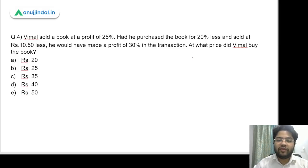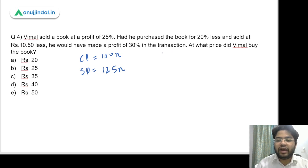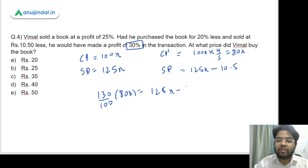Let's read question 4. Wimmel sold a book at a profit of 25%. Had he purchased the book for 20% less and sold at rupees 10.5 less, he would have made a profit of 30%. At what price did Wimmel buy the book? Let's assume he bought the book at 100X. He sold at a profit of 25%, so the SP comes out as 125X. Had he purchased at 20% less, the new CP would be 100X into 4 by 5, which is 80X. The new SP would be 125X minus 10.5, and this would have yielded a 30% profit.